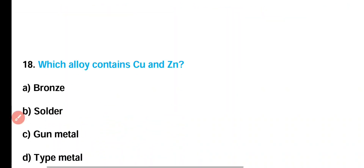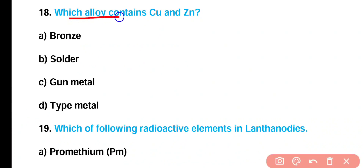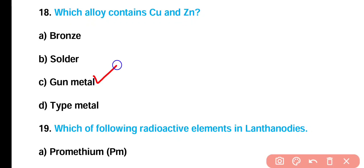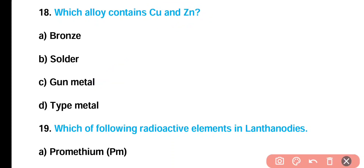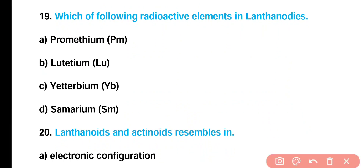Question number 18: Which alloy contains copper and zinc — bronze, solder, gun metal, or type metal? Correct answer is option C. Gun metal alloy contains copper and zinc.